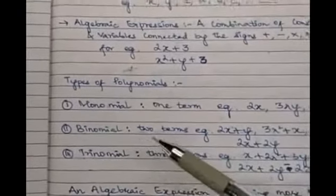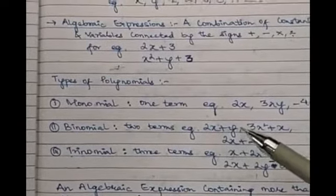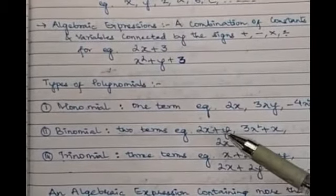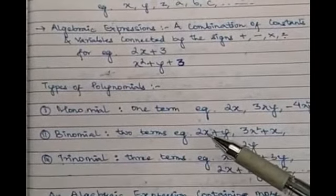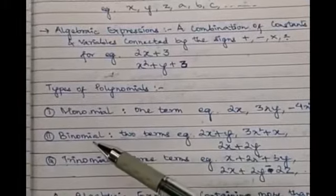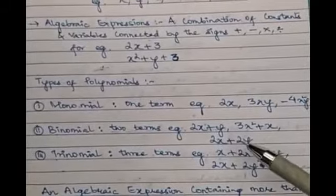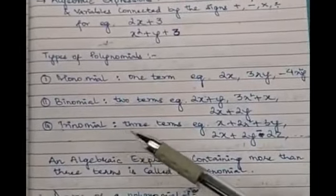Binomial has two terms. Remember, terms can be separated only with a positive or negative sign. For example, 2x plus y — because of the plus we have two terms: 2x is the first term, y is the second term. So it has two terms and is called a binomial. Similarly, 3x² plus x and 2x plus 2y are binomials.